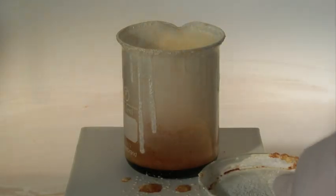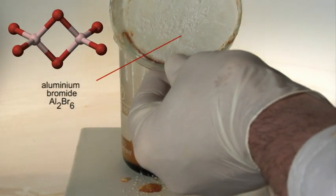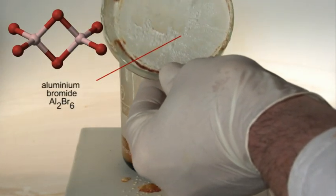Aluminum bromide is a white solid which consists of dimeric molecules with the molecular formula Al₂Br₆.